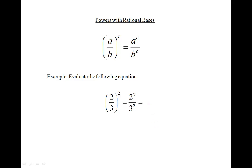Let's look at an example. 2 over 3, all to the power of 2, can be written as 2 to the 2 over 3 to the 2. 2 to the 2 on the top is the same as writing 2 times 2, which equals 4 in the numerator.